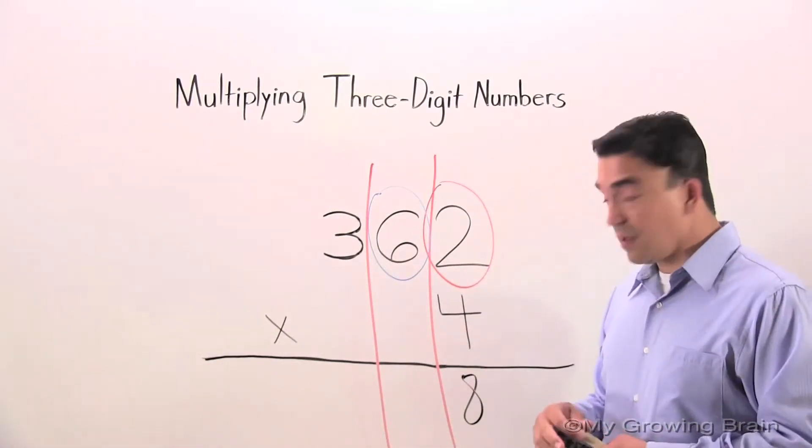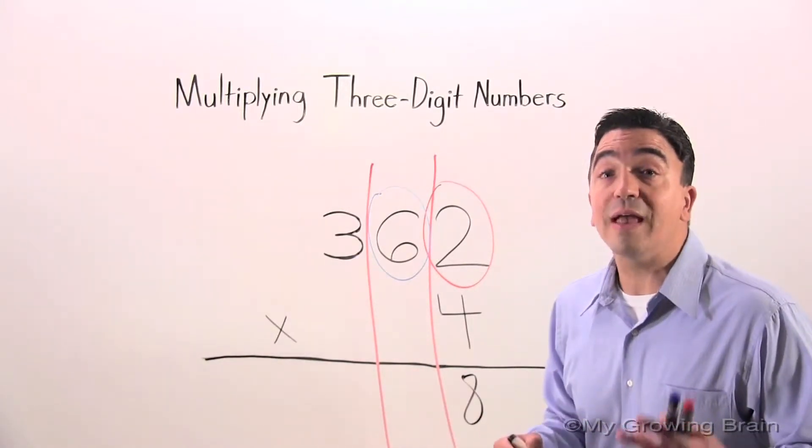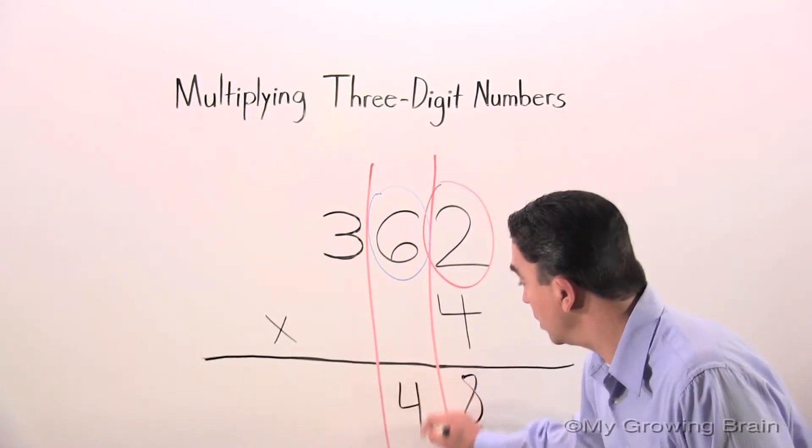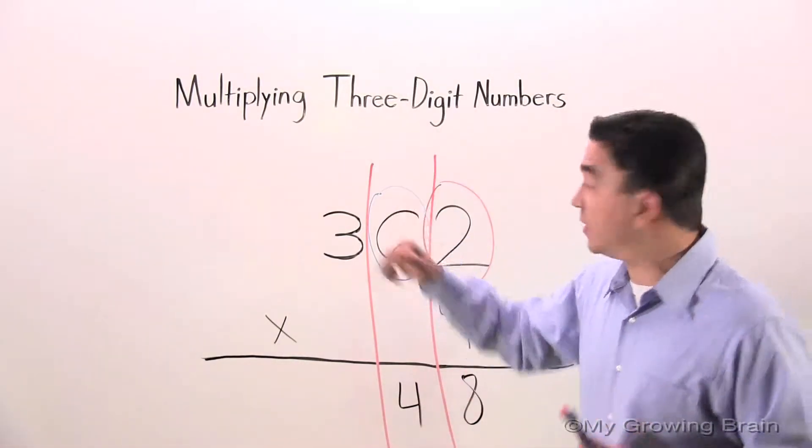Four times six is 24. That is a double-digit number. Therefore, I'm going to put the four there and proceed and regroup the two.